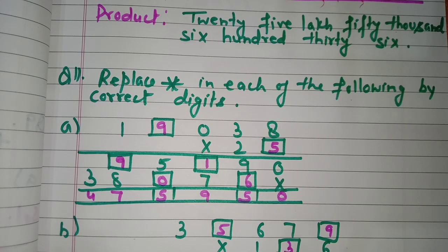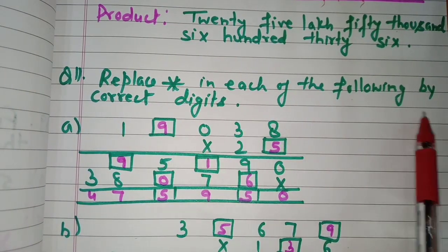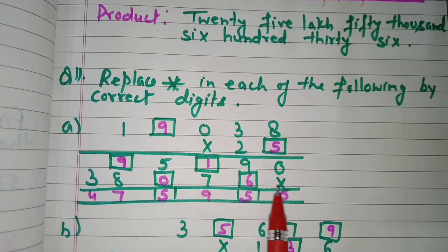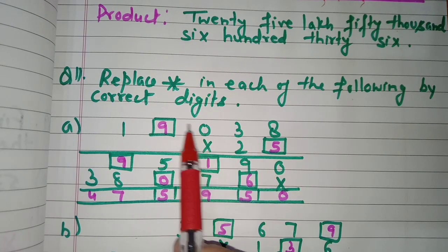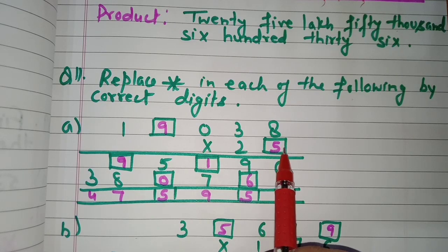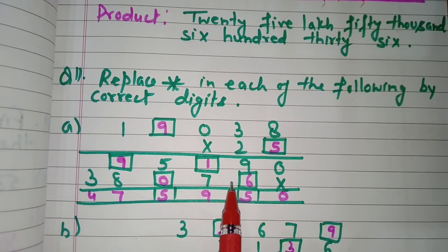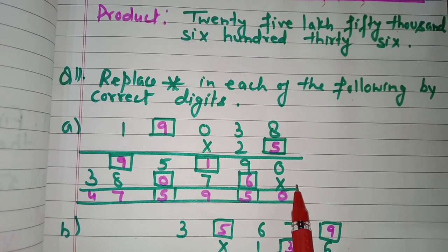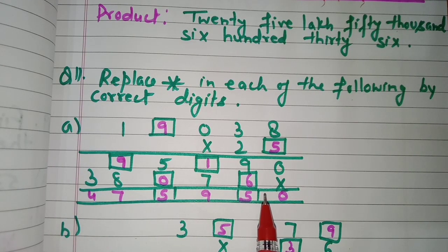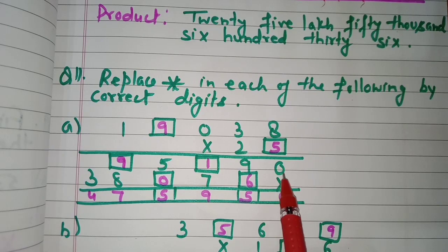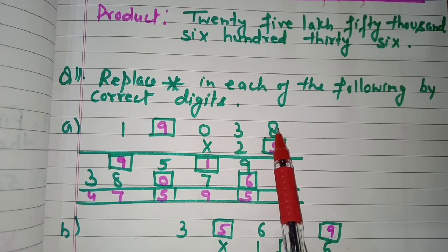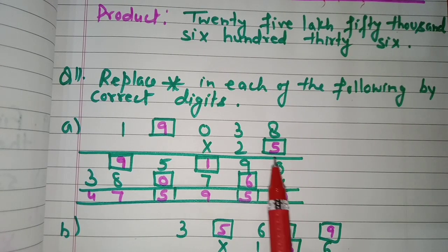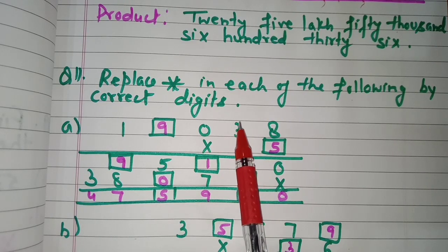Question number eleven: replace the star signs with correct digits. The numbers written in purple correspond to stars in your book. In the ones place, we have 8 as the multiplier digit. Eight fives are 40 — write zero, carry four. Five threes are 15 plus four carry is 19 — write nine, carry one. Five zeros plus one carry is one.